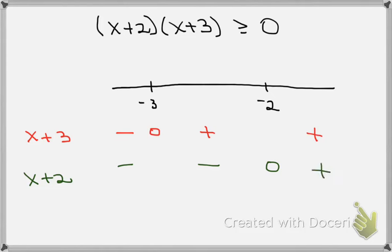Now we know the signs of both factors on every interval. To the left of minus 3, both factors are negative — multiplying two negatives gives a positive, so we put a plus sign there. At minus 3, one factor is zero so the product is zero. Between minus 3 and minus 2, one factor is negative and the other positive, giving a negative product. At minus 2, one factor is zero so the product is zero. To the right of minus 2, both factors are positive — multiplying two positives gives a positive number.